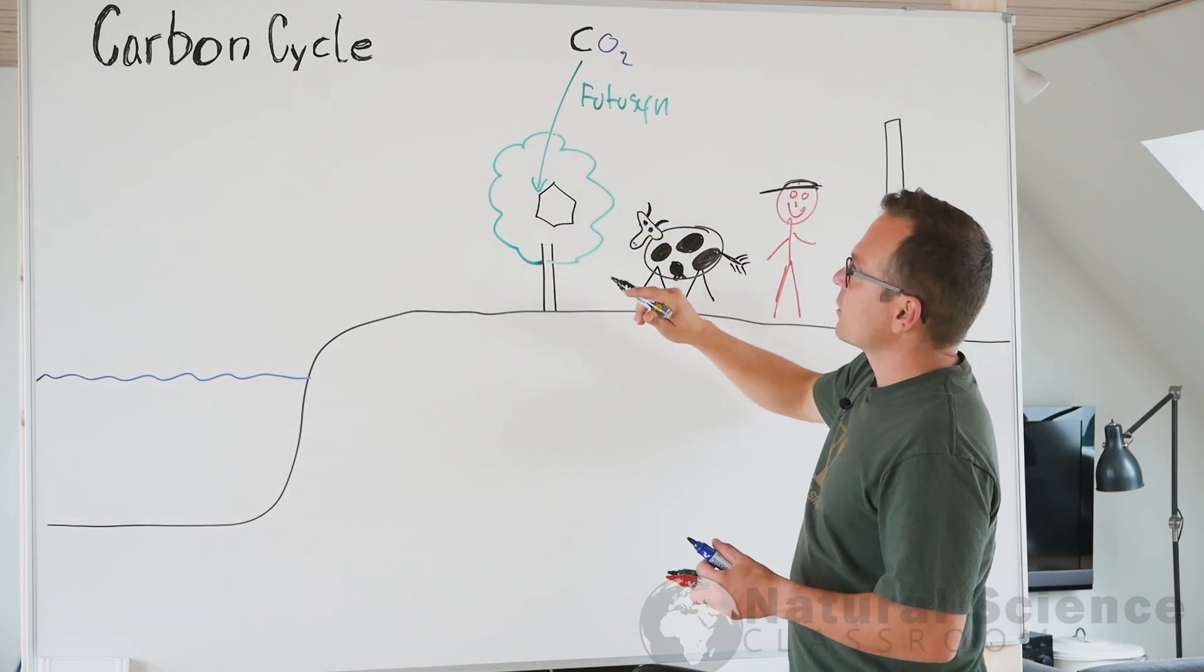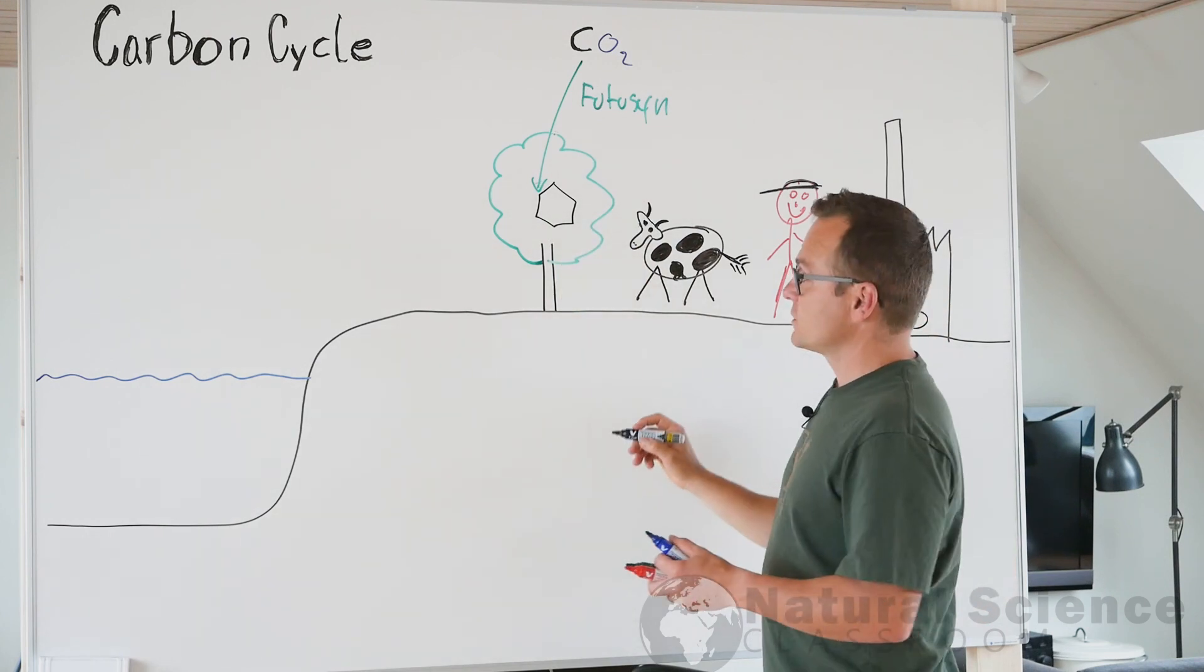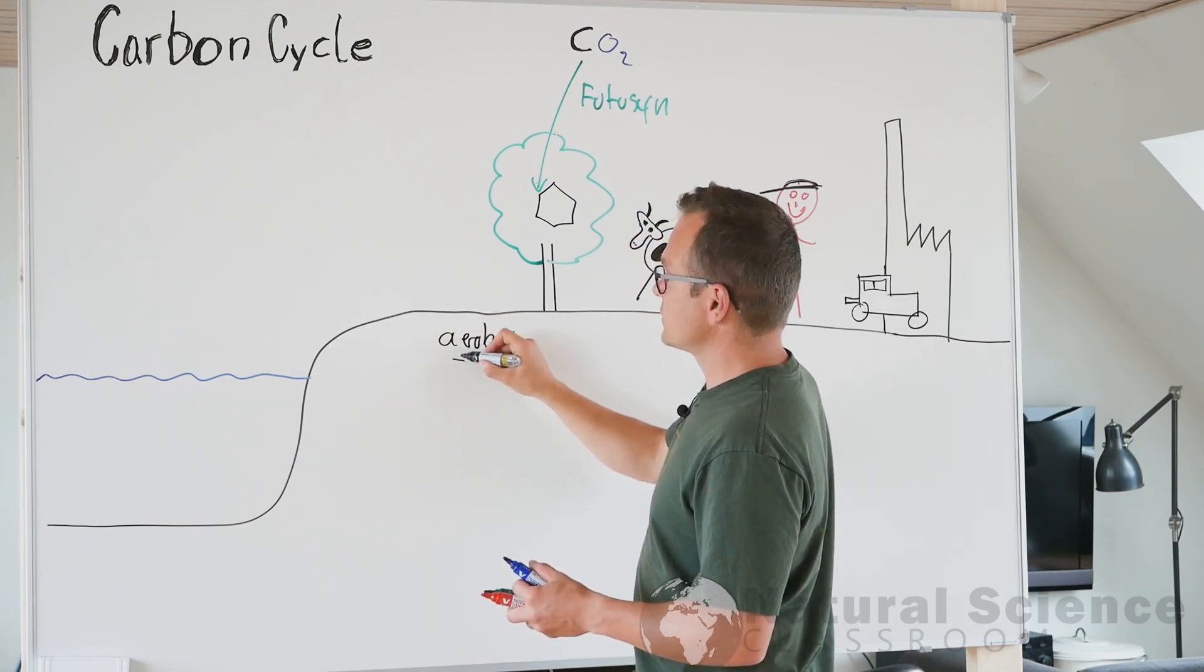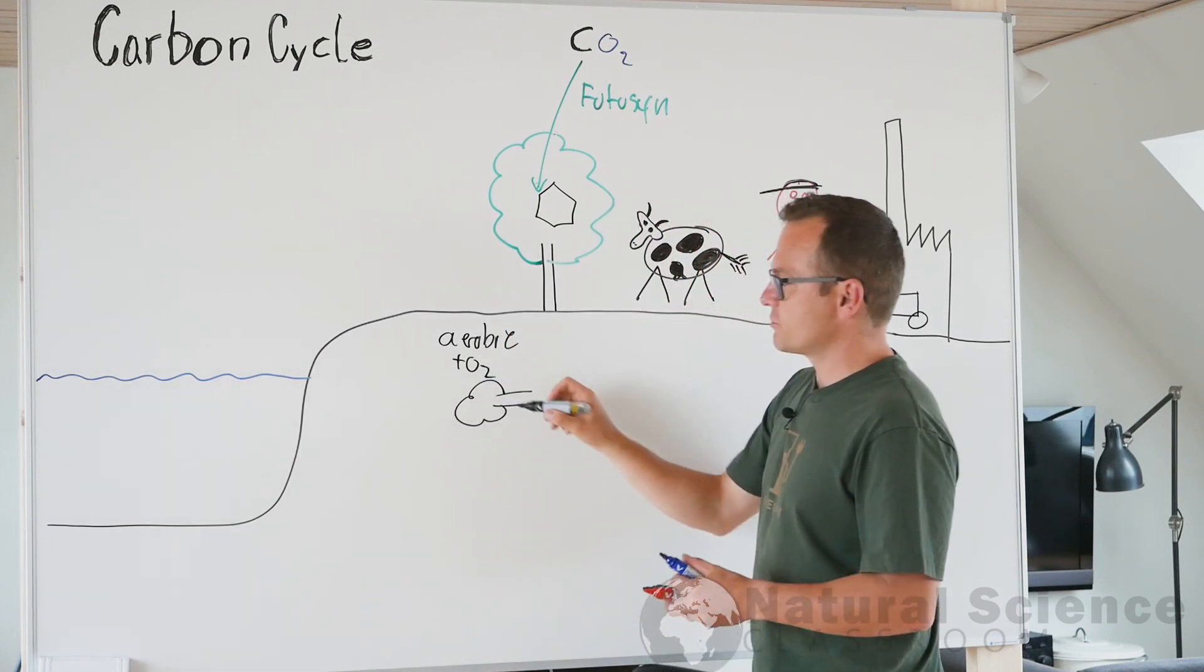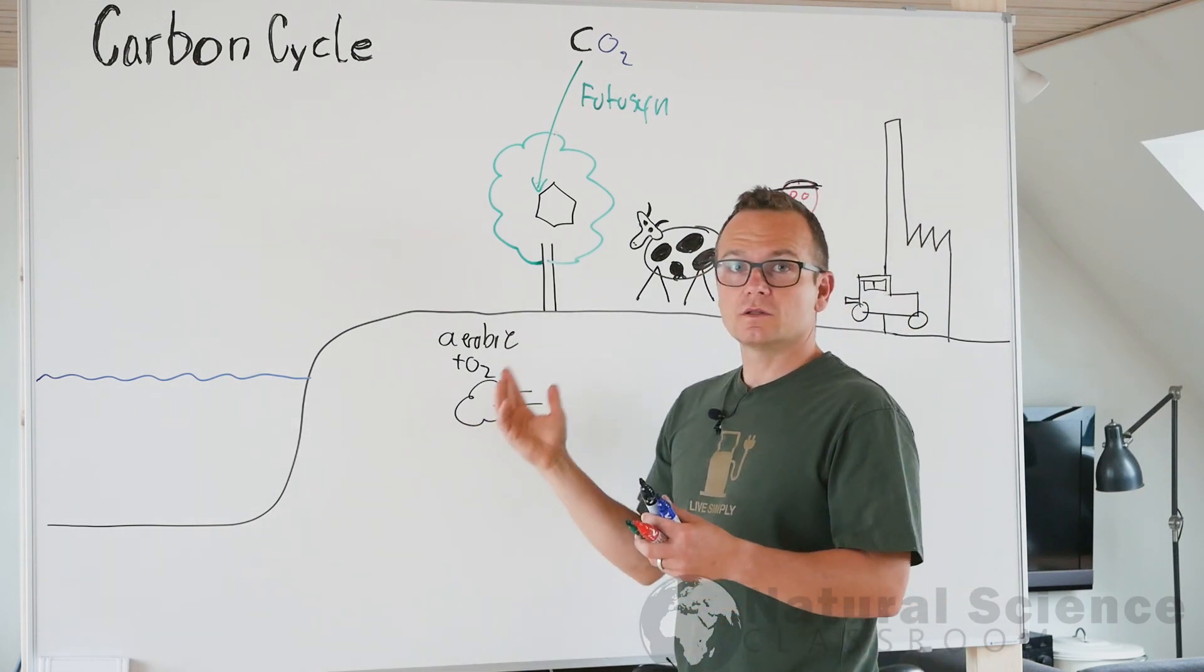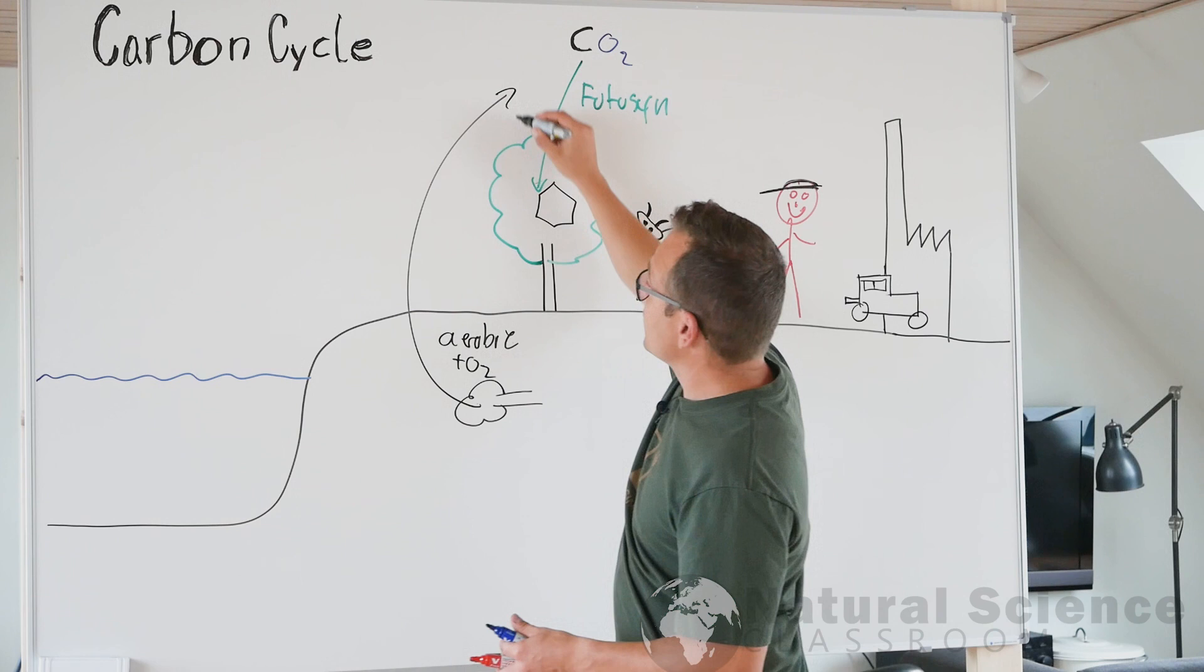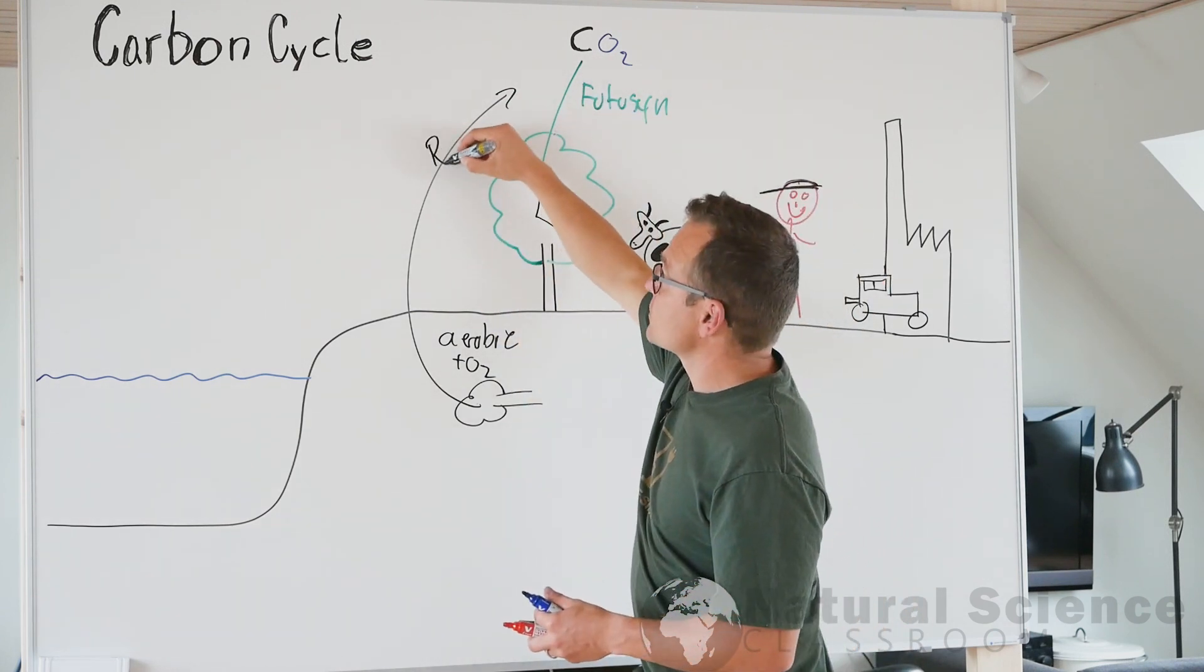So in order to get on with our cycle, we need the vegetation to die. The vegetation can die in different ways. It could die under aerobic conditions, meaning there is oxygen present. So if there is oxygen present, here's the dead tree, bacteria will decompose the tree and make the process called respiration. And respiration will make CO2 and re-emit it back to the atmosphere.